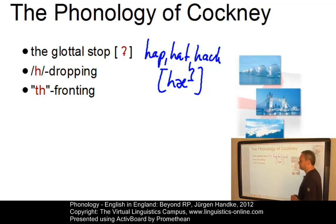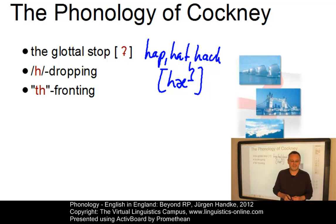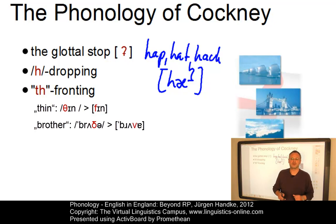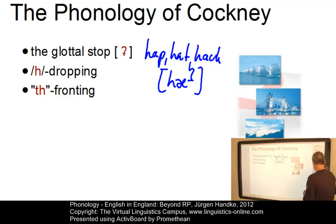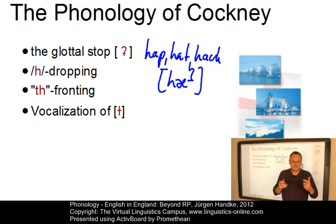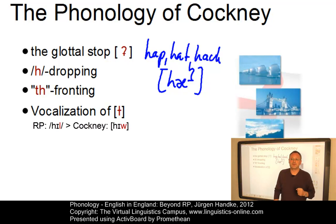TH-fronting, or the replacement of the dental fricatives by labiodental ones, involves words such as 'thin,' which comes out as 'fin,' or 'brother,' which would be realized as 'bruvver' in Cockney. The vocalization of dark L is also an interesting feature. This involves words such as 'hill,' where the dark L is replaced by a labial-velar approximant, and the result would be 'hiw.'